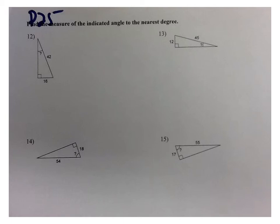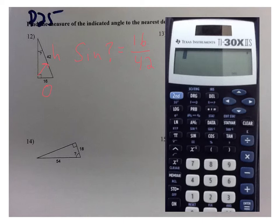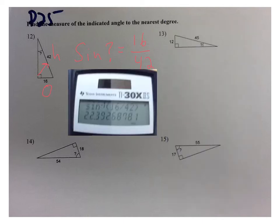Now we're into the second part of the new material — finding an angle measure. I can see this is the opposite side and this is the hypotenuse. I ask myself: what trig ratio uses opposite and hypotenuse? Sine. So the sine of that angle equals 16 over 42. To use the calculator to find the angle, look above the sine button — there's a little blue sine to the negative 1, called the arc sine or inverse sine. Press the 2nd button to access it, and then type in the fraction using parentheses. That angle measure is 23.4 degrees.